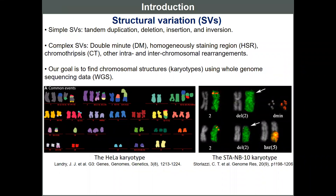Our interest is structural variations. There are a variety of kinds of structural variations, including simple types such as tandem duplication and deletion. Further, complex types of SVs have been found in cancer genomes, such as DMs, homogeneous staining regions, and chromothripsis, and other intra- and interchromosomal complex rearrangements. Our goal is to find chromosomal structures, known as karyotypes, derived from these SVs, using whole genome sequencing data.